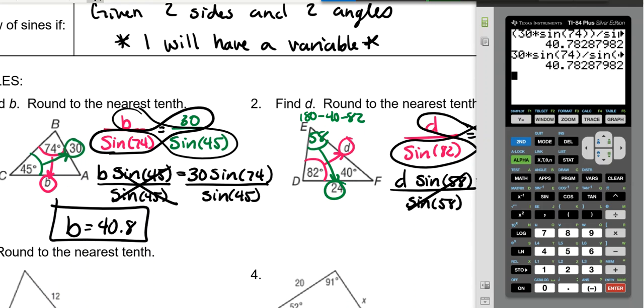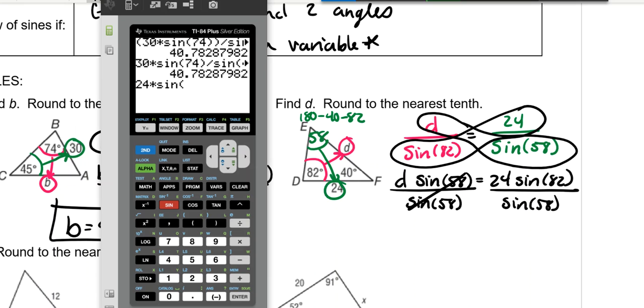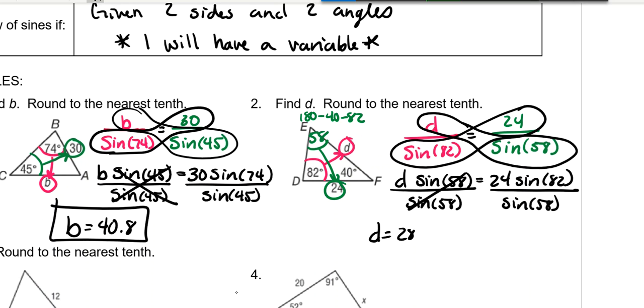These cancel. And you just put all of that in the calculator. So we're going to do 24 times the sine of 82. You do need to close those parentheses, though, for sure. And then divide it by the sine of 58. So that is equal to 28.02, which is just 28.0.